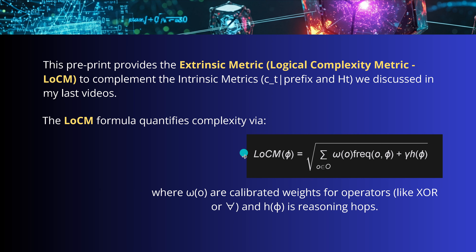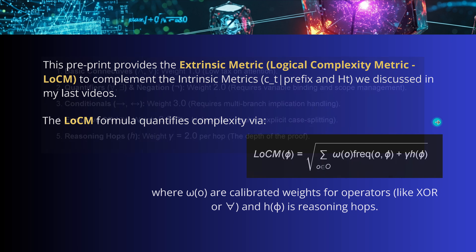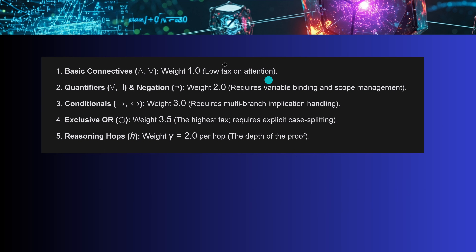The W_O's are the calibrated weights for the operators, and H is the number of reasoning hops. For weight one we have basic connectives; weight two covers quantifiers and negation; weight three requires multi-branch implication handling with conditionals; and weight 3.5 — the highest tax — requires explicit case splitting, such as exclusive-or. Reasoning hops contribute two points per hop.